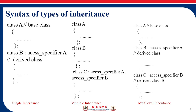To start with the first type, we have single inheritance. What we know about single inheritance is we derive the properties from a single class — only one base class and one derived class. Here the syntax has class A as the base class and class B as the derived class.